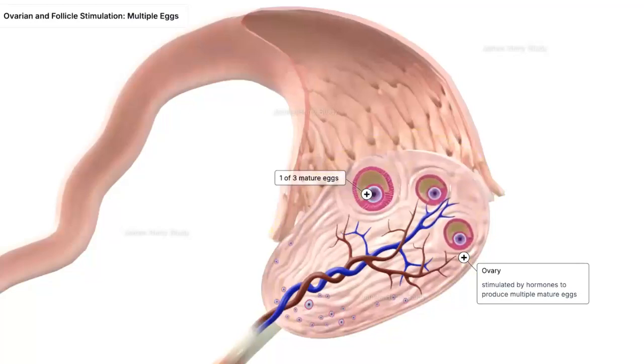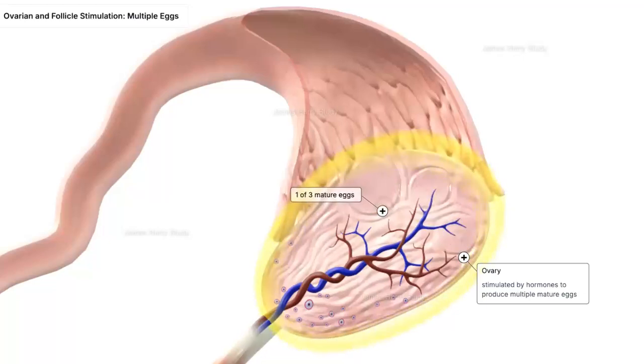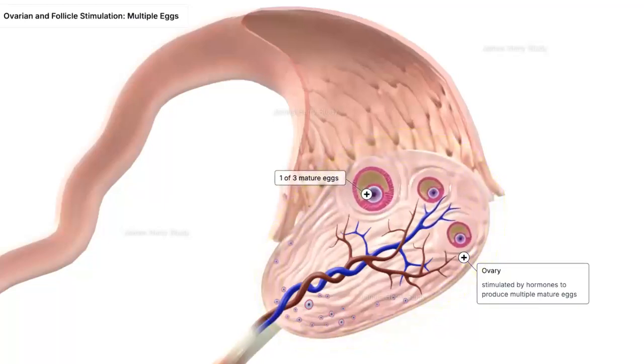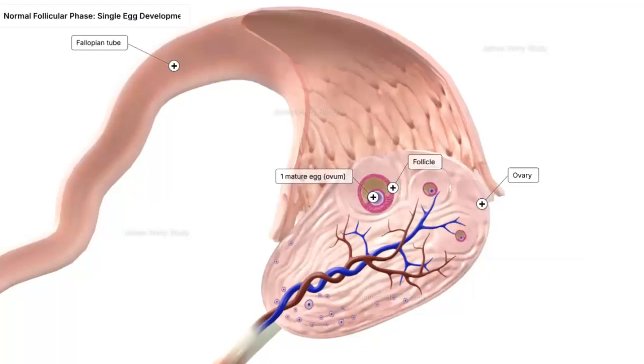Over the next 12 days, ultrasound imaging and blood tests closely monitor follicle growth inside the ovaries, ensuring the eggs mature safely and effectively. This is the ovary, and as you can see, three mature eggs are developing simultaneously.